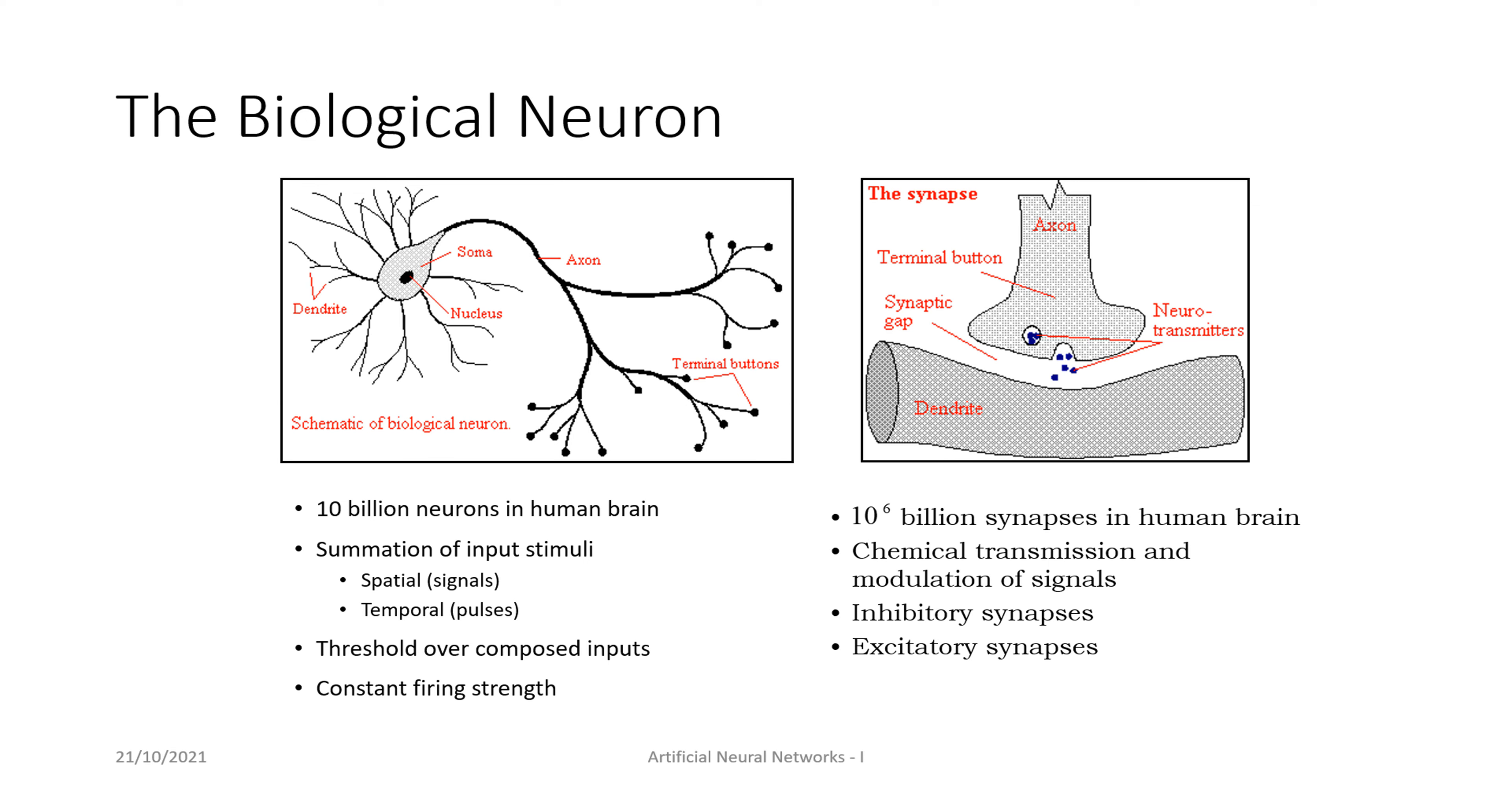There are 10^6 billion synapses in the human brain. This is the most complex machinery which we are studying on the planet, students.